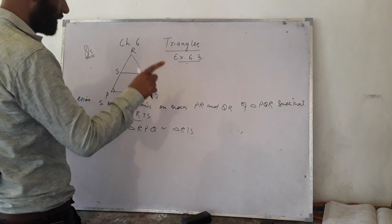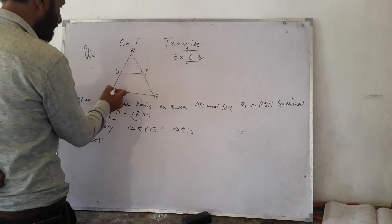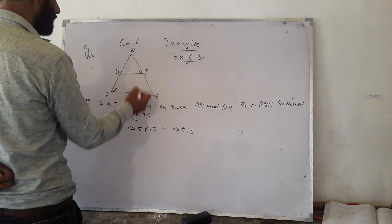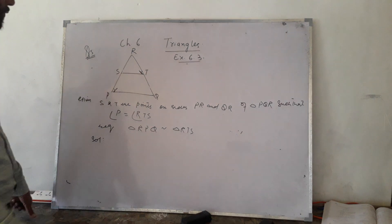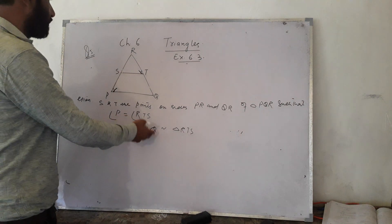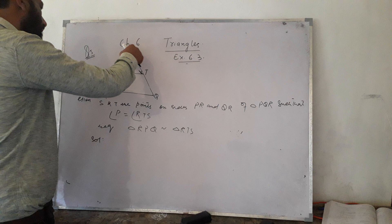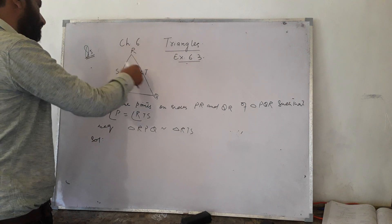Triangle PQR such that angle P is equal to angle RTS. We need to find if triangle RPQ is similar to triangle RTS.